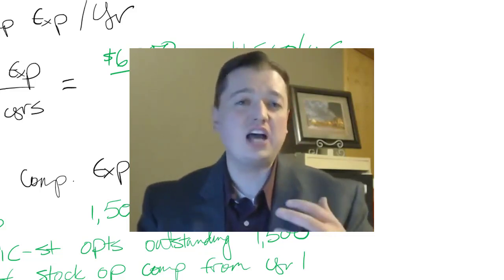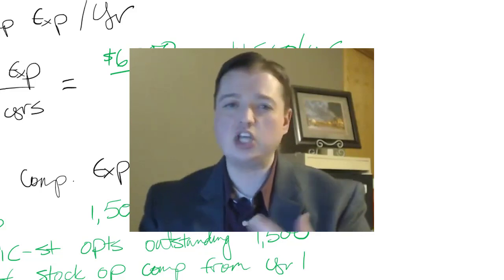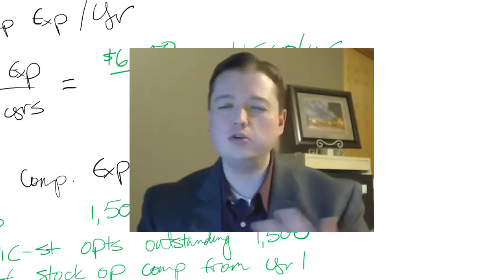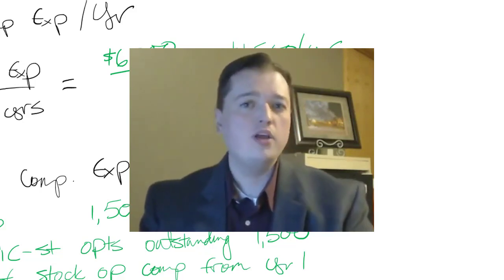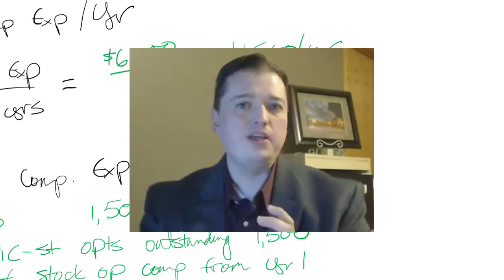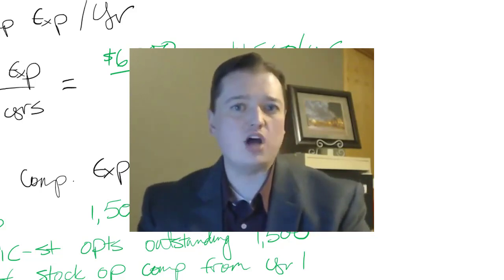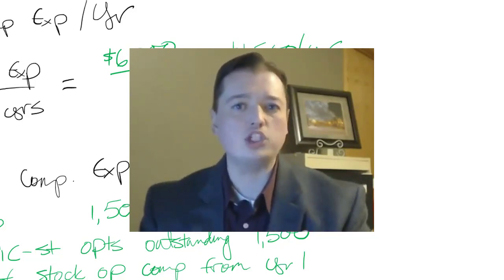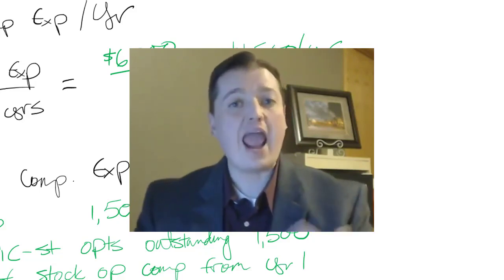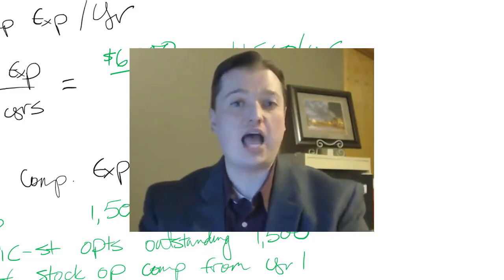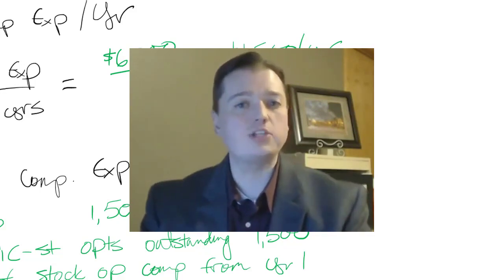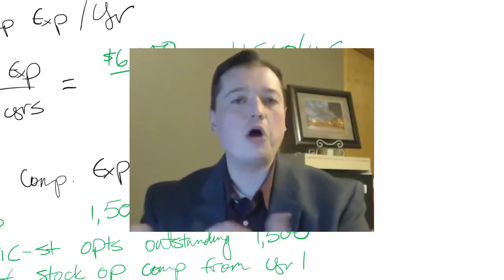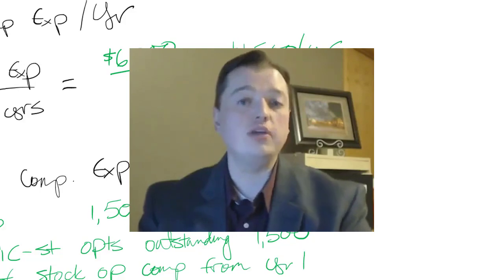After going through the specific calculations of EPS and talking about convertible securities and diluted securities and how they create this diluted EPS number that allows investors to see what would happen if everybody who could get stock did get stock, we started talking about the journal entries. What happens if they do actually decide to use their stock options or to convert their preferred stock or convert their bonds. That's what we've been working on in the last couple of segments, the journal entries that go along with these convertible or dilutive securities.